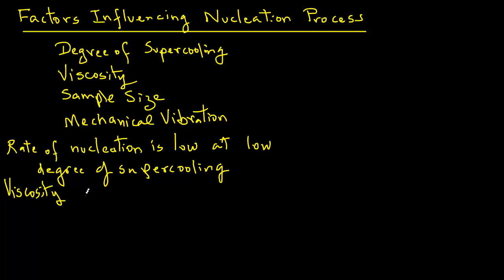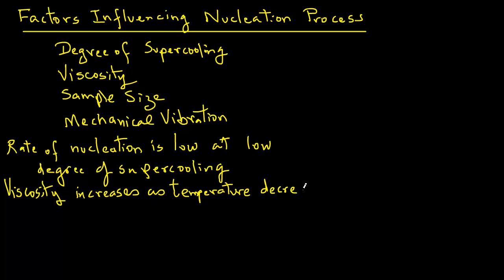The second factor is the viscosity of a food sample. It increases with decreasing temperature. At some low temperature, the increased viscosity reduces the rate of nucleation. For example, for pure water, a decrease in nucleation is seen around minus 100 degrees Celsius. However, the practical implication of this is not very significant because we don't really go down to those low temperatures.